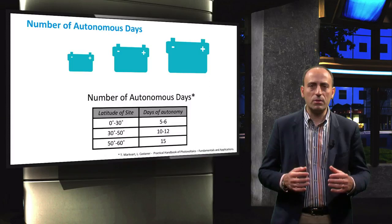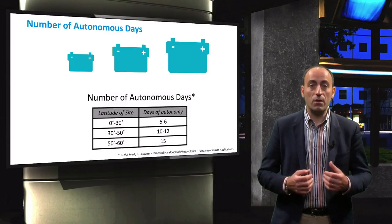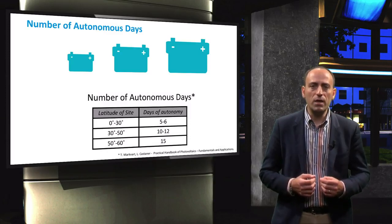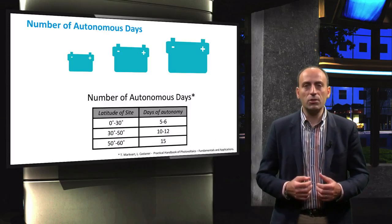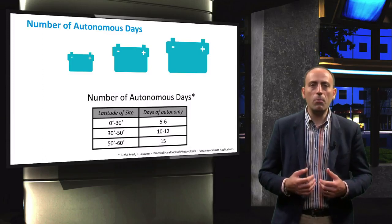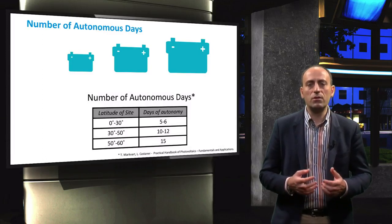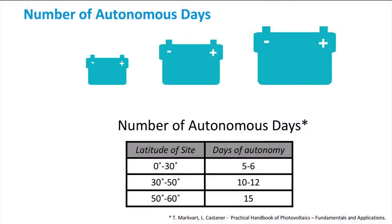For larger PV systems, such as in a remote building or in telecommunication systems where the load demands are high, the number of autonomous days can be determined based on their location. The selection can be made using the following table as a guideline. Here, the number of autonomous days for a certain location are given based on their latitude. You can see that the higher the latitudes, the larger the number of autonomous days.